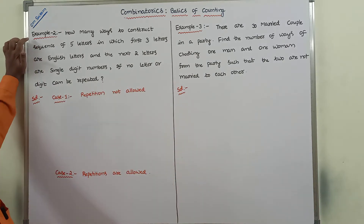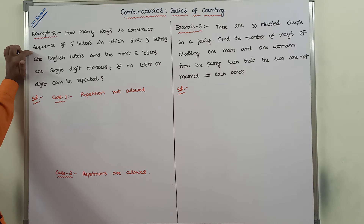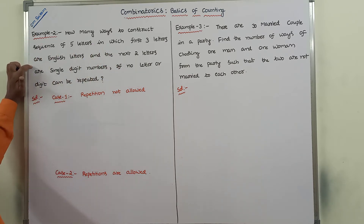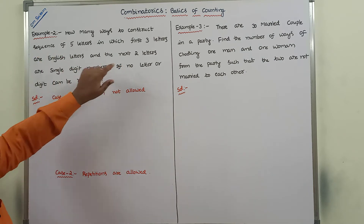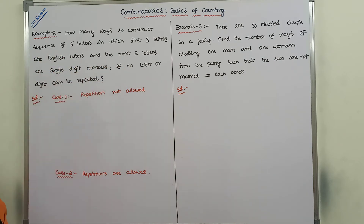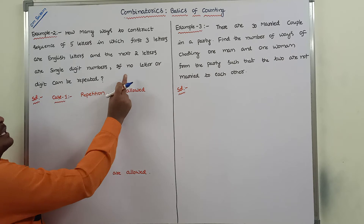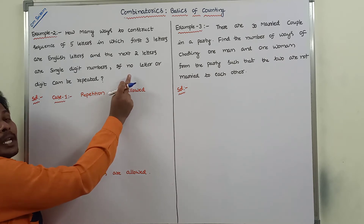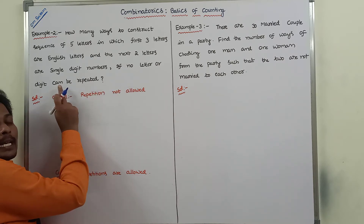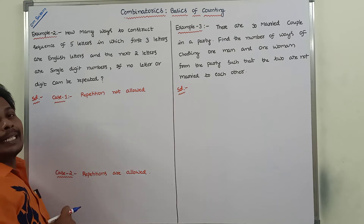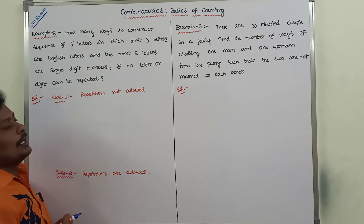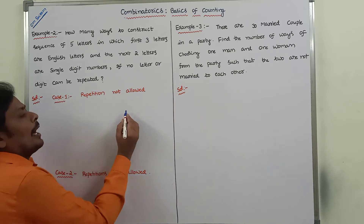Now we go for example two. The problem: how many ways to construct a sequence of five letters in which the first three letters are English letters and the next two letters are single digit numbers, if no letter or digit can be repeated — that means there is no repetition of any English letter or any single digit number.